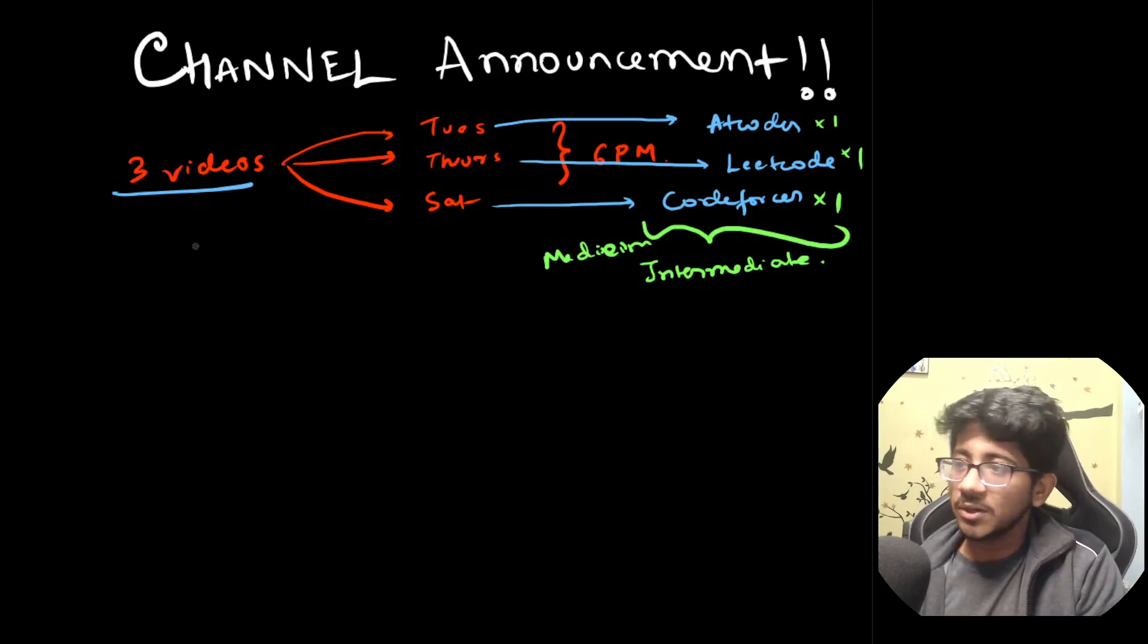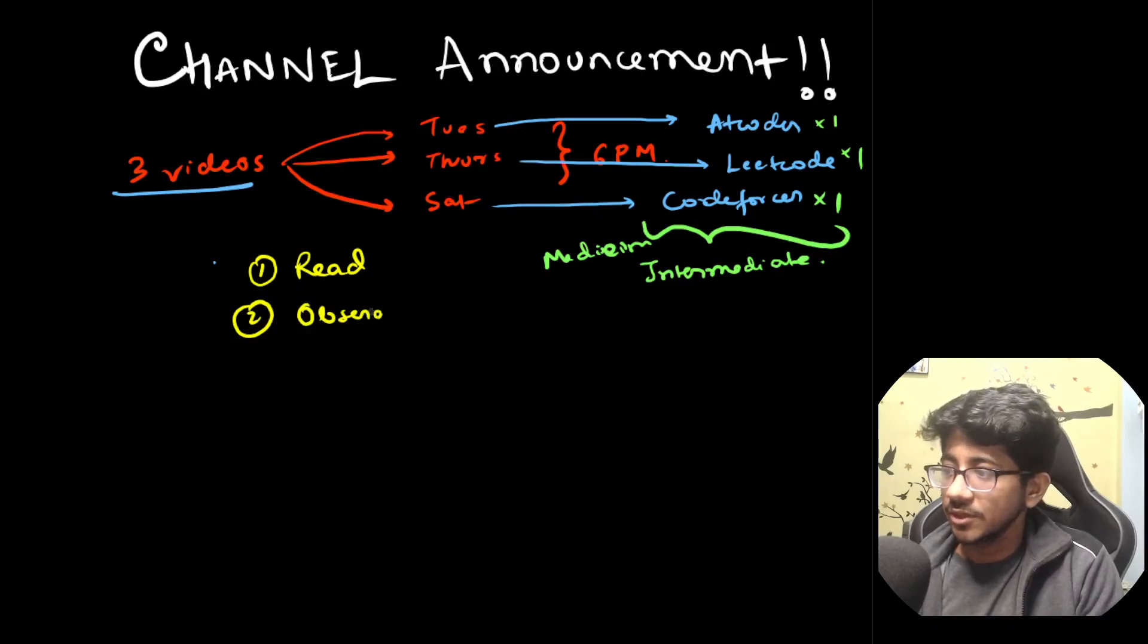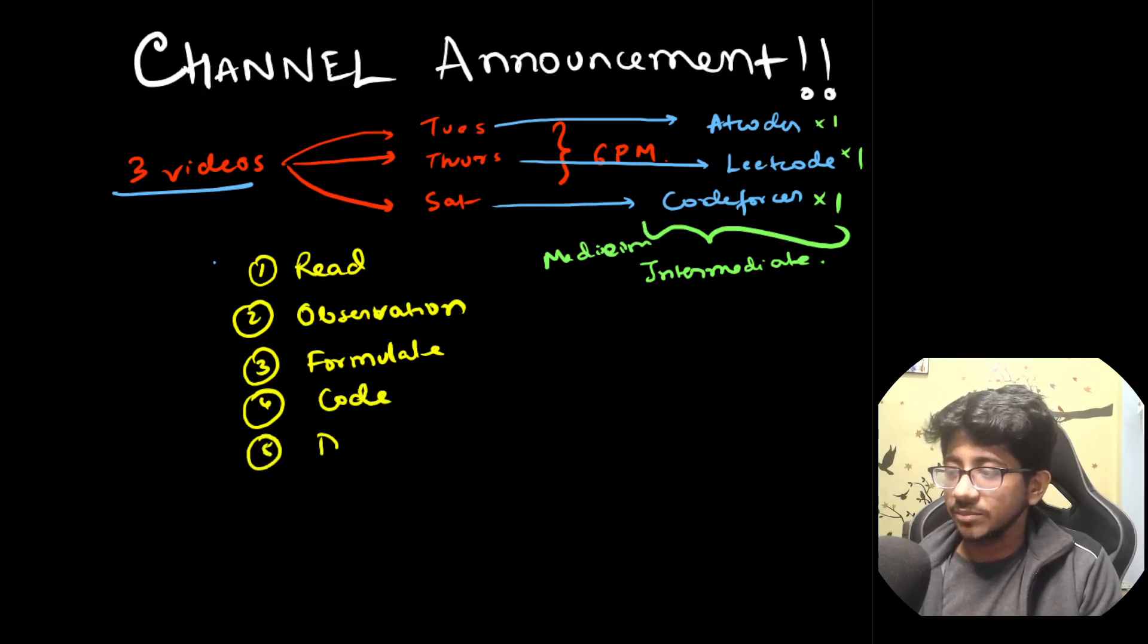Secondly, I'm going to talk about how you can structurally actually think about problems. So whenever you're solving a particular problem, there are different phases in which you solve it. You first of all read. Next, you make the observations and connect the stuff. Then you think of how to formulate in terms of code. Then you actually go ahead and code the particular problem. And then you finally debug if there is something that is an issue.